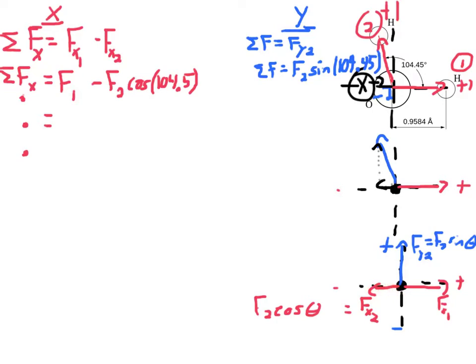fx2 is a component of the force of the second hydrogen. That x-component is f2 cosine theta — that's how we get the x-component of any vector. So f2 cosine 104.45 degrees. In the y-axis, I have f2 sine 104.45. That's the component of force 2 in the y-axis — sine for the y-axis.